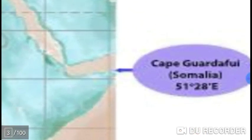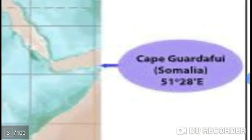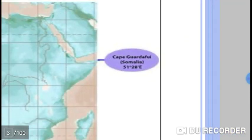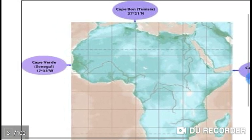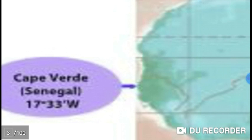The second one is the Eastern Periphery of Africa. The Eastern Extreme of Africa is named Cape Gardafi at Somalia, measuring 51 degrees and 28 minutes. The third one is the Western Periphery of Africa, located in Senegal, named Cape Verde.